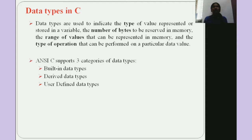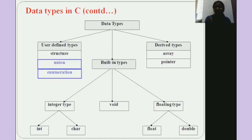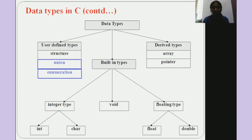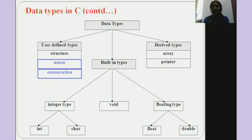Generally in C we have three categories of data types: built-in data types, derived data types, and user-defined data types. Under built-in we have integer, void, and floating types. Under derived we have array and pointer. Under user-defined we have structure, union, and enumeration. Today's video will focus mostly on the built-in data types; in future sessions we'll cover arrays, pointers, structures, union, and enumeration.